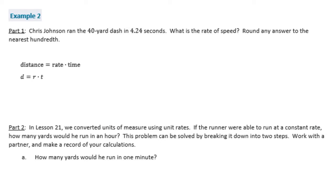Part one: Chris Johnson ran the 40-yard dash in 4 and 24 hundredths seconds. What is the rate of speed? Round any answer to the nearest hundredth. The whole point of this lesson is to understand that distance equals rate times time — a formula you'll hear all through high school, maybe even into college.